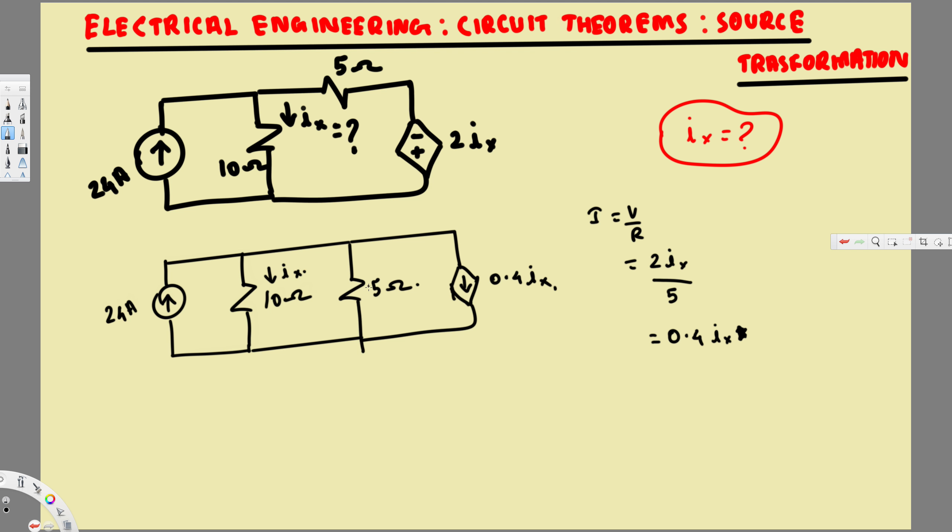Okay, now we have this 5 ohm, this 10 ohm, and we have 24 amp and 0.4Ix, so we have two current sources we can combine together. To illustrate this better, we can bring the 24 amp to one side so you can clearly see how we're going to combine. I'll just write the other things first, here we have 10 ohm.